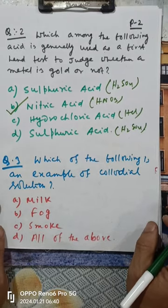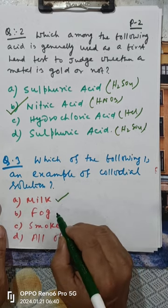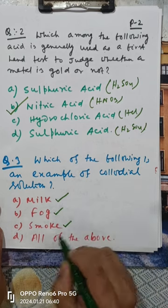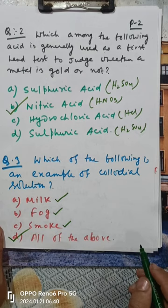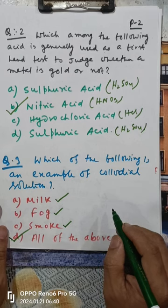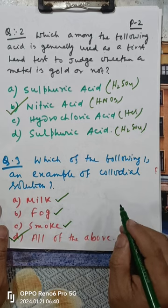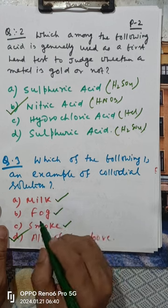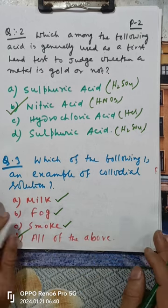Question three: which among the following is an example of a colloidal solution? Milk is a colloidal solution, fog is also colloidal, and smoke is also colloidal. So the answer is all of the above. In milk, proteins are dissolved and the solution is not transparent but is homogeneous — that makes it colloidal. Similarly, fog and smoke are all colloidal solutions.